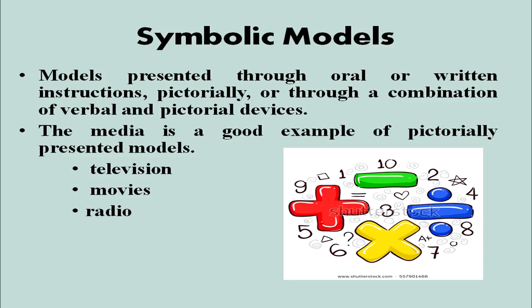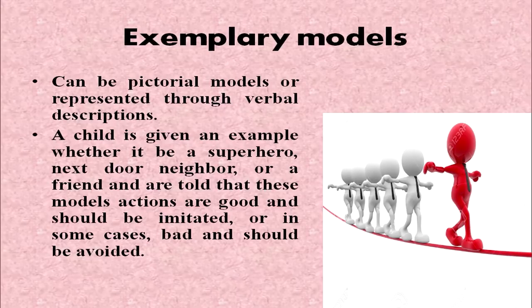Symbolic models are presented through oral or written instructions, pictorially, or through a combination of verbal and pictorial devices — like addition and subtraction in mathematics, or alphabets in English. Good examples of pictorially presented models are television, movies, and radio. Exemplary models can be pictorial or represented through verbal description. A child is given an example — whether it be a superhero, next-door neighbor, or a friend — and told that these model actions are good and should be imitated, or in some cases bad and should be avoided. Examples of exemplary models are Sachin Tendulkar, PT Usha, etc.